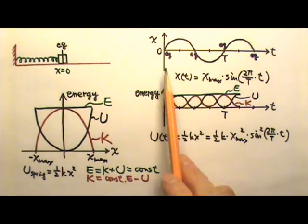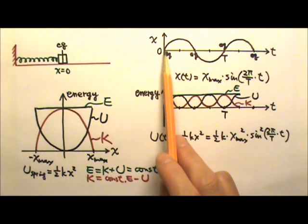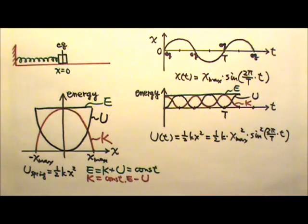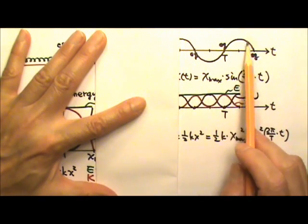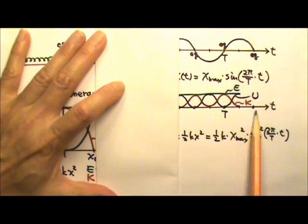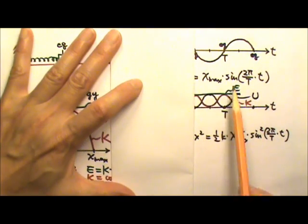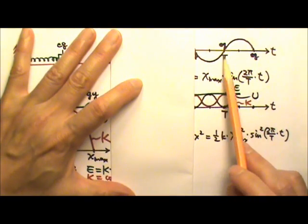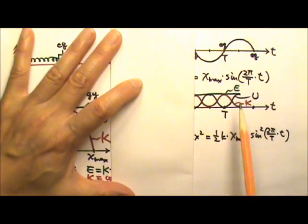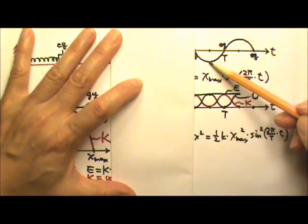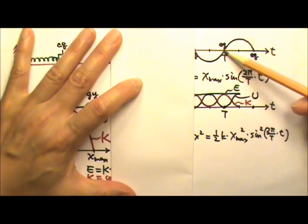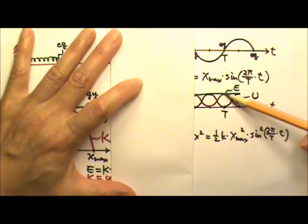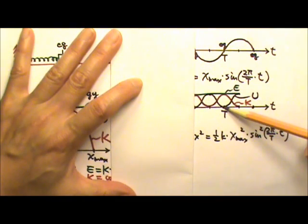If we start t equals zero at a different position, our energy graph would shift accordingly. If the position graph is a cosine function, our energy graph would shift like this. If our position graph is a negative sine function, the energy graph would look like this. No matter what — if it's at an end point, the potential energy is a maximum and the kinetic energy is zero; if it's at equilibrium, the kinetic energy is maximum while the potential energy is zero.